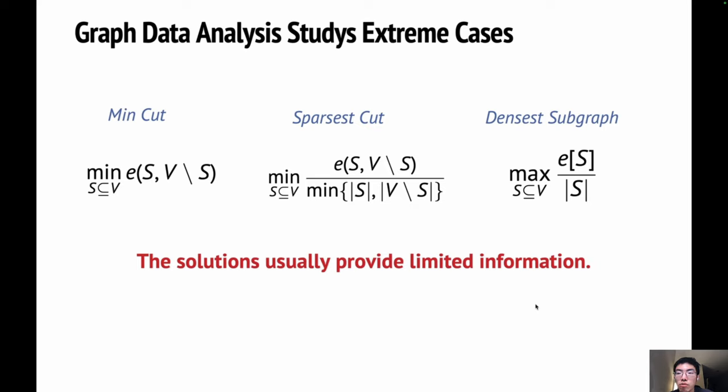For example, a straightforward min cut computation on a connected graph may simply give a cut induced by any degree 1 vertex, which barely provides any useful information.